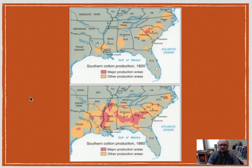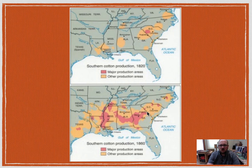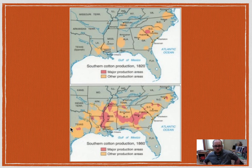Looking at this map, you see a big push of cotton production — just a little bit in South Carolina and Georgia prior to 1820. But by 1860, cotton had spread throughout Georgia, Alabama, and really up and down the Mississippi River. Also in Texas too — one of the big pushes for why many people settled in Texas was to expand cotton plantations into East Texas.